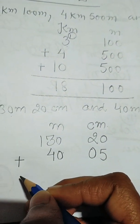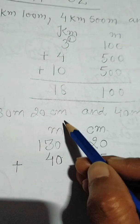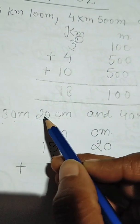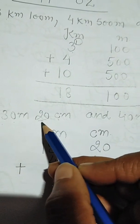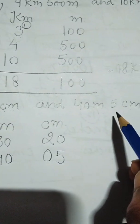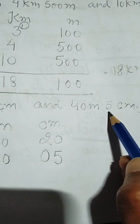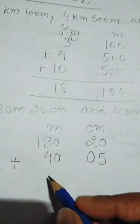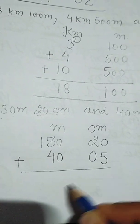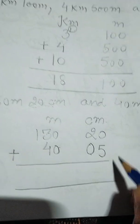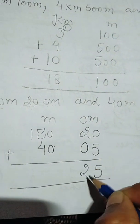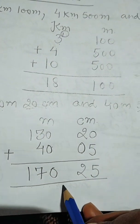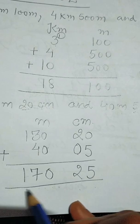An important rule: before writing centimeters we must have two digits. If in any sum there is only one digit, we put one zero before it to complete two digits, so our addition will be correct. Here: 5 plus 0 is 5, and we get 2 here, 0 plus 7 is 7, and 1. So we got 170 meter 25 centimeter as the answer.